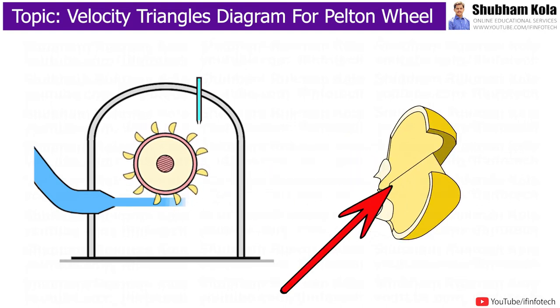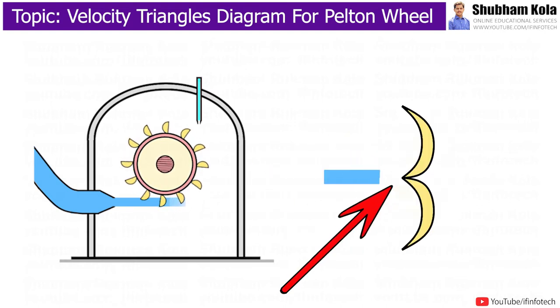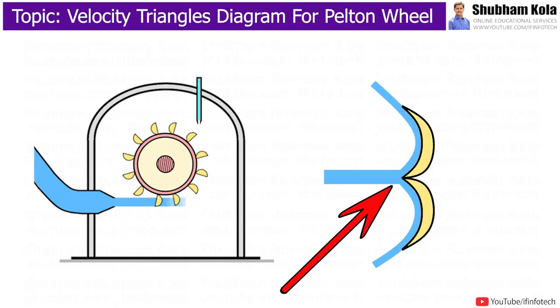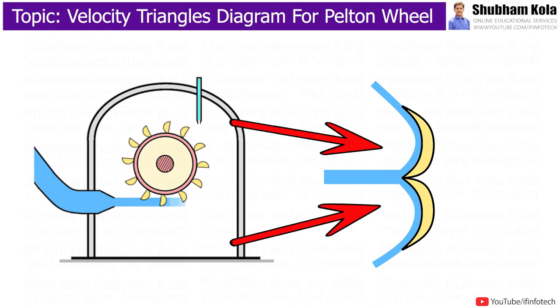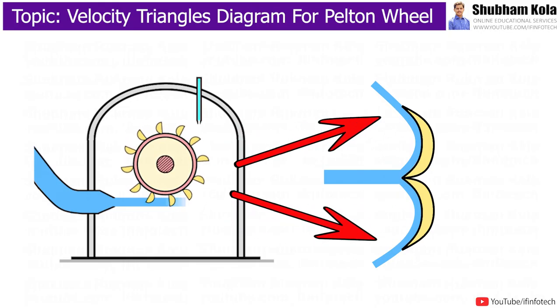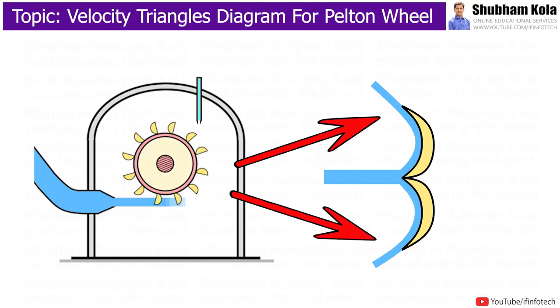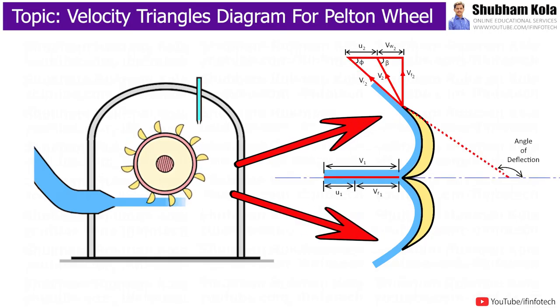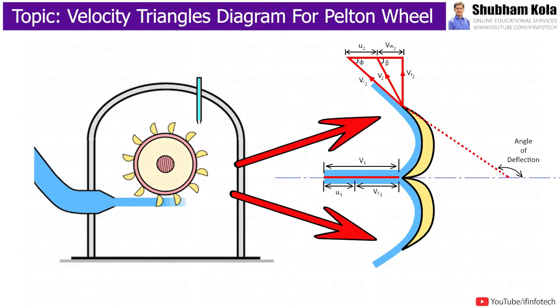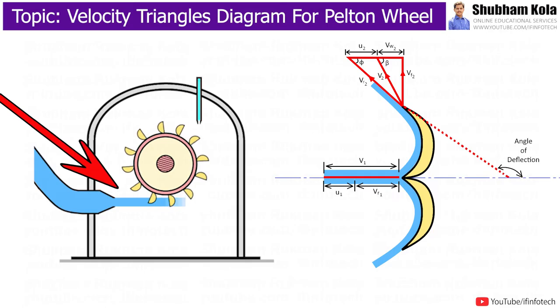At the center of each bucket, there is a splitter ridge which divides the jet into two equal streams, which glide over the inner surface of the bucket and leave the bucket at the outer edge with relative velocity opposite in direction to the original jet.